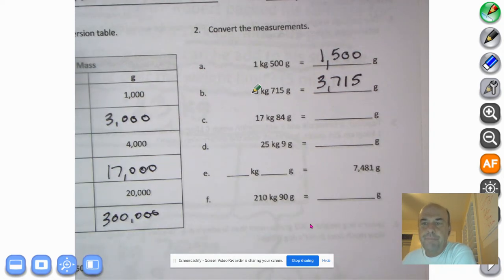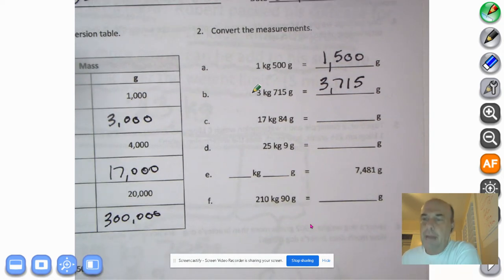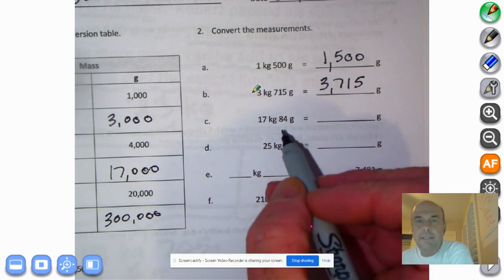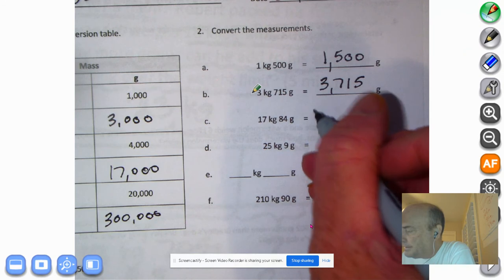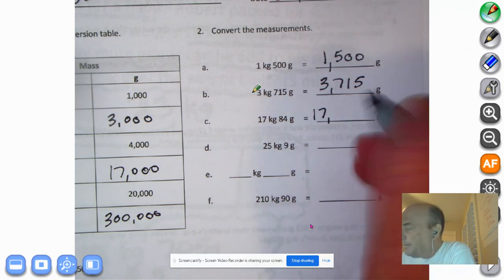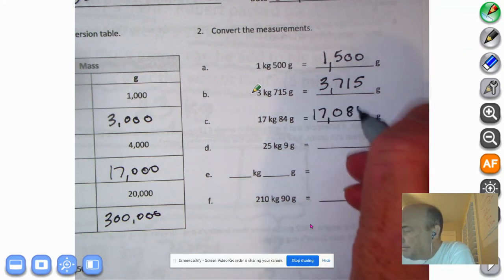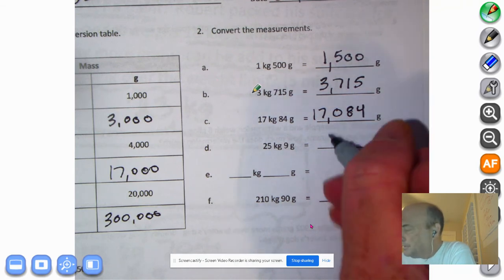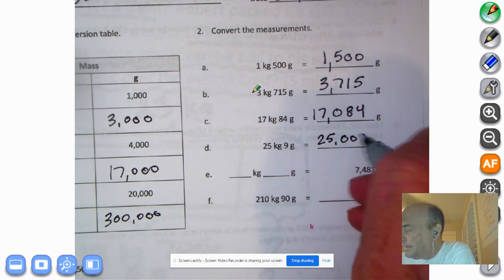See if you got them right. And welcome back, you fabulous fourth graders. Here we go. 17 kilograms. So that would be 17,084 grams. No hundreds. Zero, eight, four. We're going to have 25 kilograms, nine grams. 25,000. That's a tricky one. Zero, zero, nine grams.